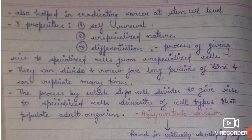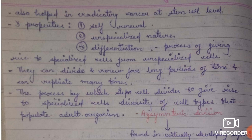There is also asymmetric division, which is the process by which stem cells give rise to specialized cells that populate the adult organism and create diversity within it. Asymmetric division is found in virtually all developing systems. Stem cells are rare in most tissues but are used in disease treatment and in treating serious injuries.